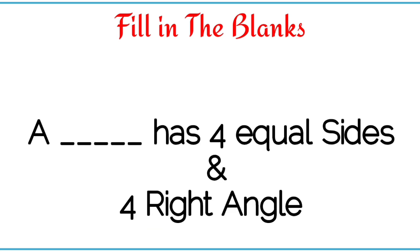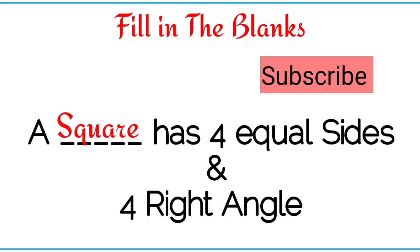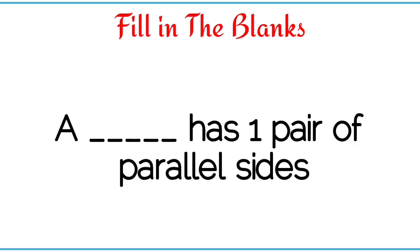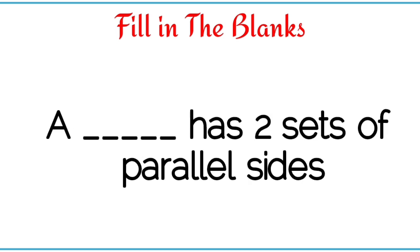A dash has four equal sides and four right angles. A dash has one pair of parallel sides. A trapezoid — a trapezoid has one pair of parallel sides. A dash has two sets of parallel sides.